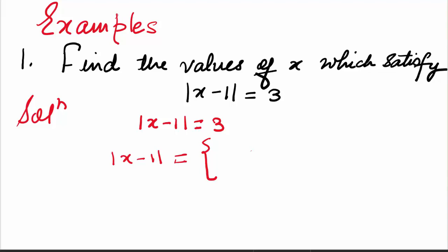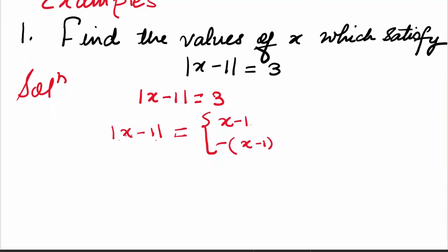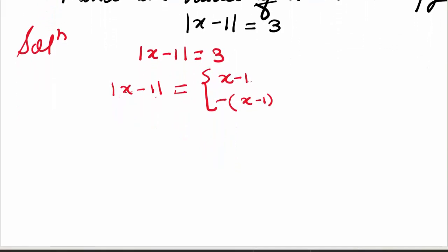In the first case, we take whatever's inside our modulus — that is the function of x — as plus f of x. So here we'll take it as x minus 1. Our function here is x minus 1. So the first case is mod of x minus 1 is x minus 1. And in the second case, we'll take it as minus of x minus 1. And together, they will give us the solution.